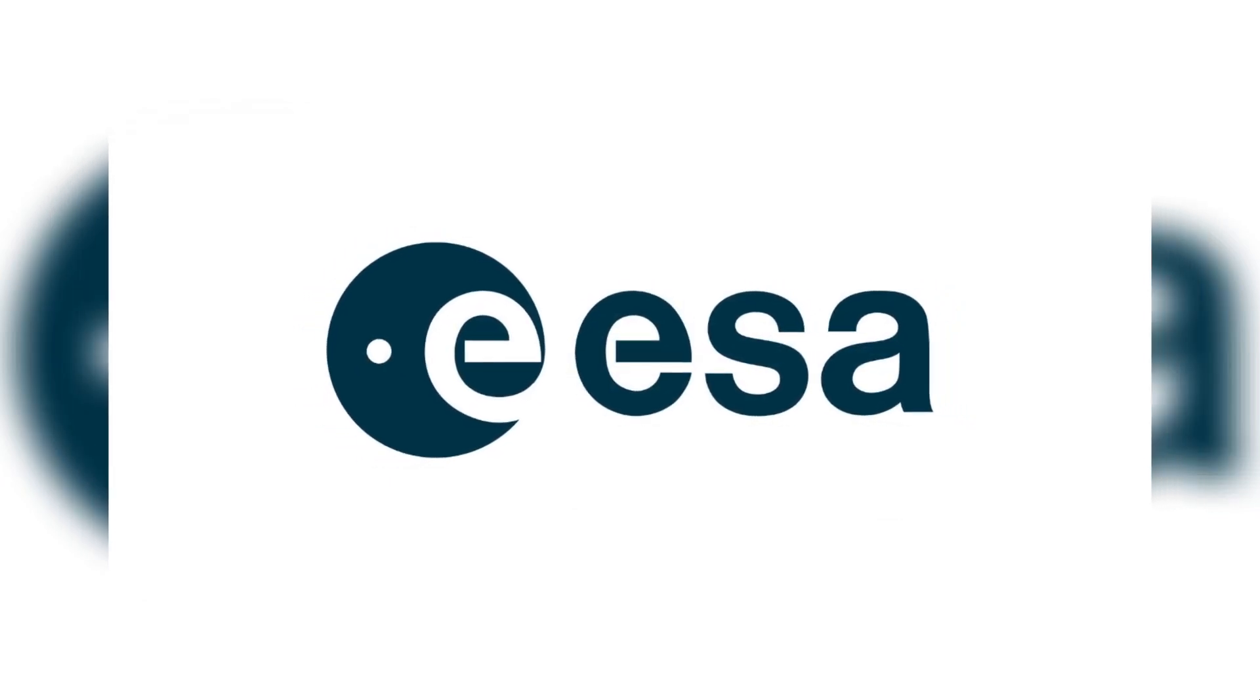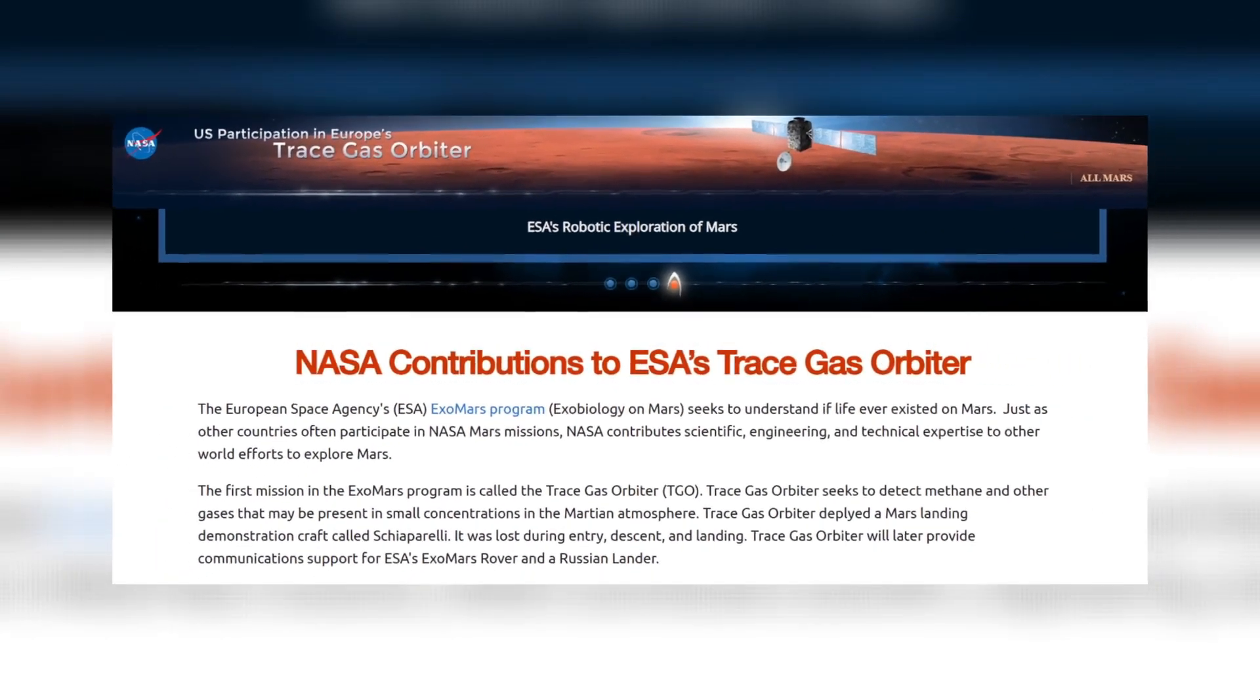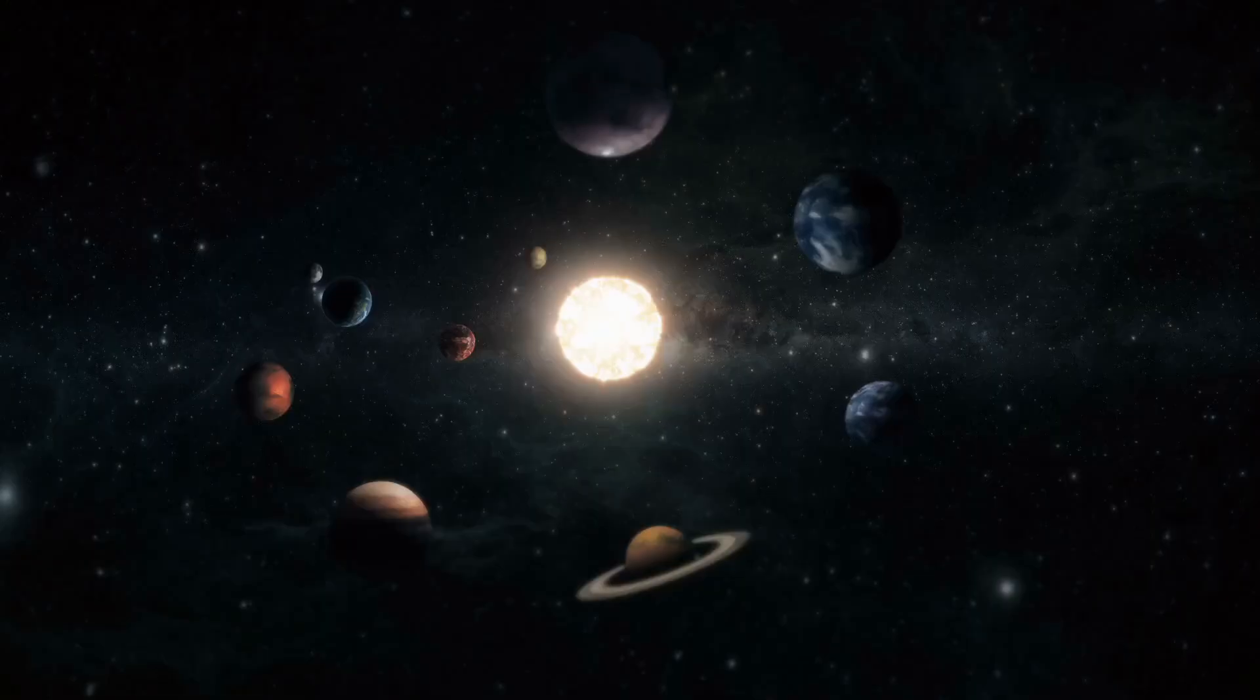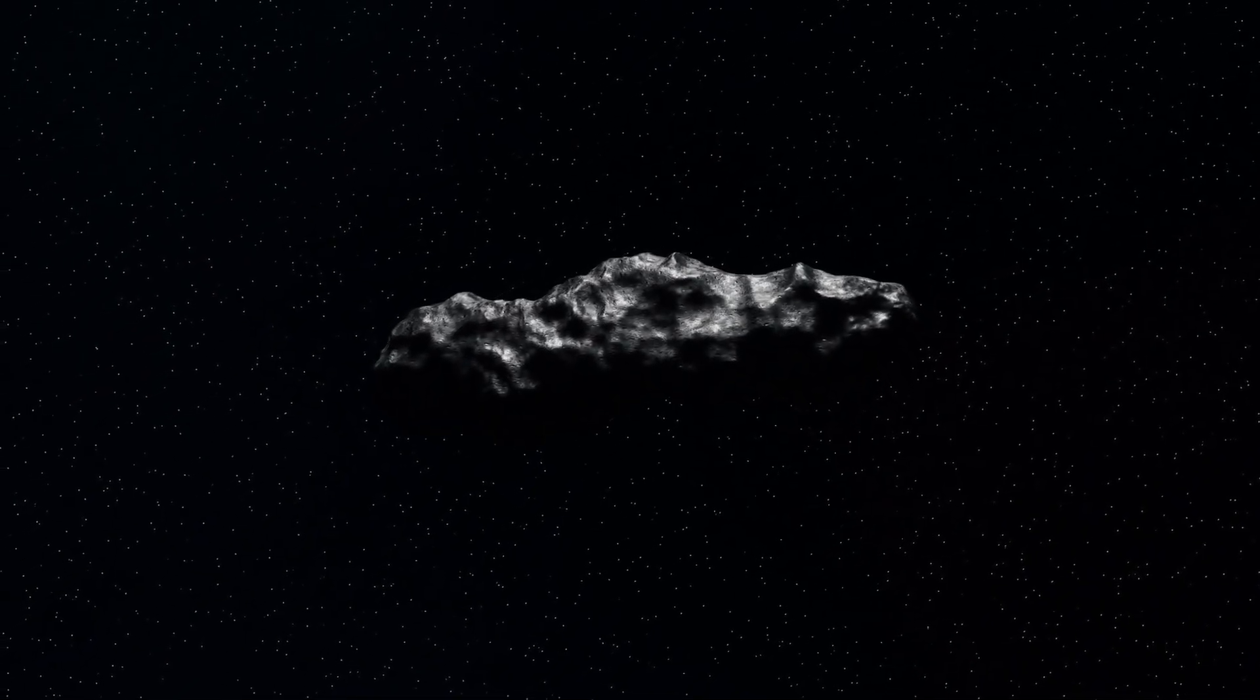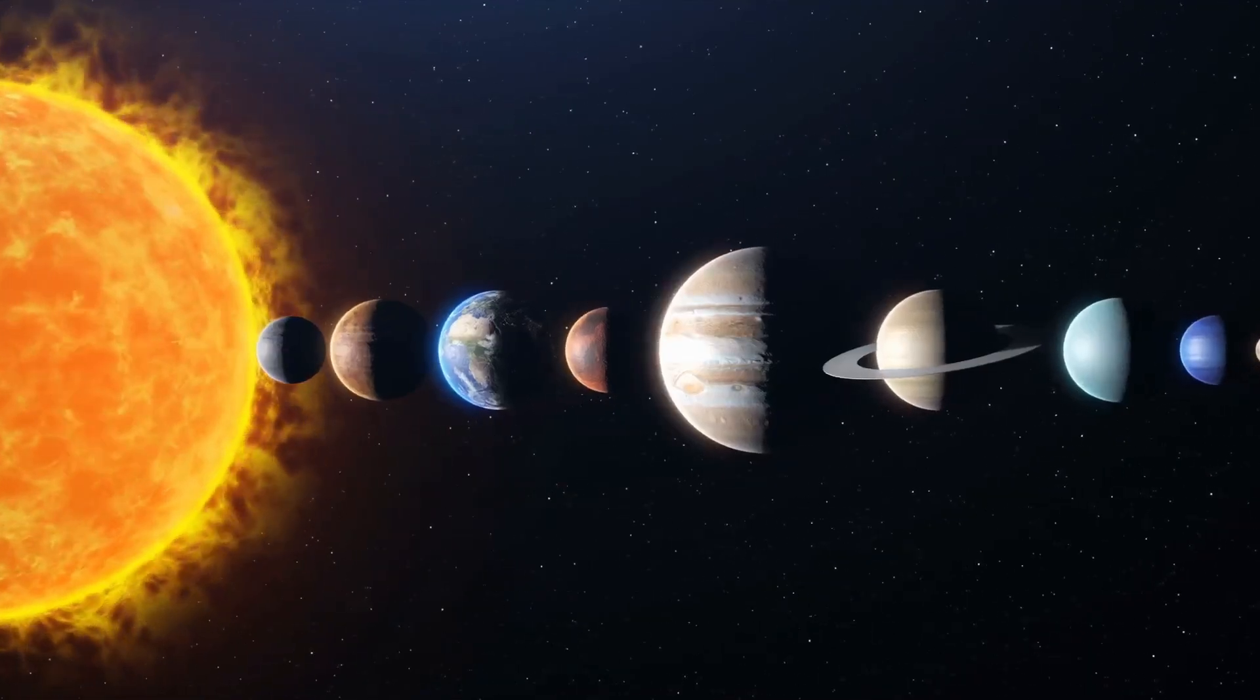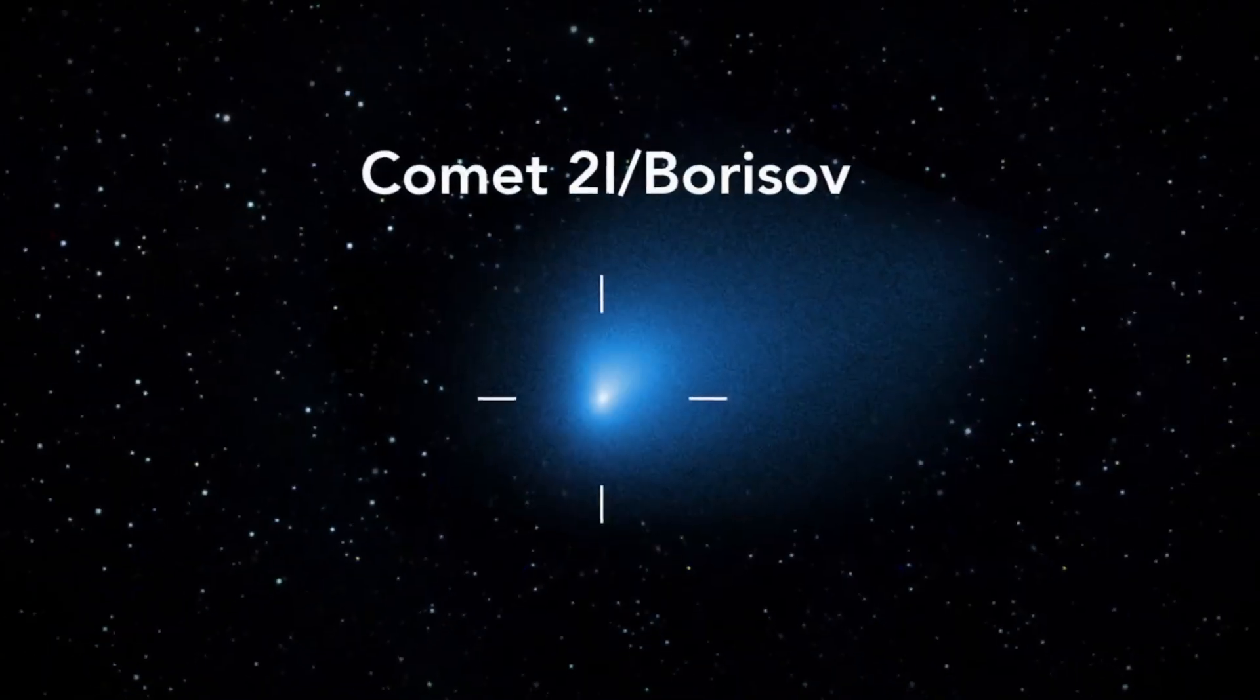The European Space Agency ESA has released a set of newly-processed images from its ExoMars Trace Gas Orbiter that may offer the most detailed view yet of one of the most mysterious visitors ever detected within our solar system. The object, designated 3I Atlas, is only the third confirmed interstellar body known to have entered the solar system, following 1I Oumuamua in 2017 and 2I Borisov in 2019.